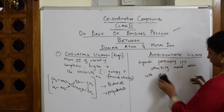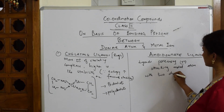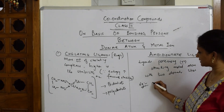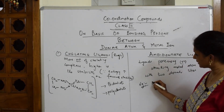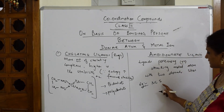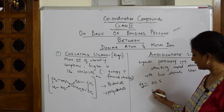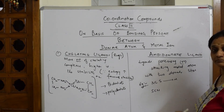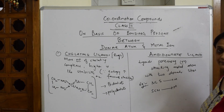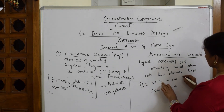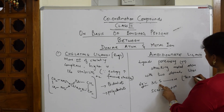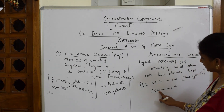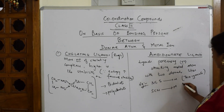A common example is the thiocyanate ion: N-C-S. In the first case, it links through sulfur to the metal atom — this is called thiocyanate. In the second case, it links through nitrogen to the metal atom — N-C-S bonding from nitrogen — and this is called isothiocyanate. So the same ligand has two donor sites: sulfur and nitrogen.